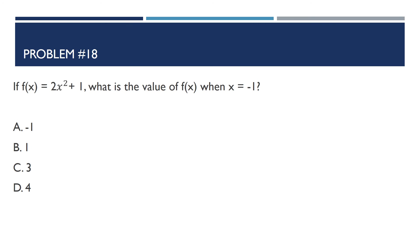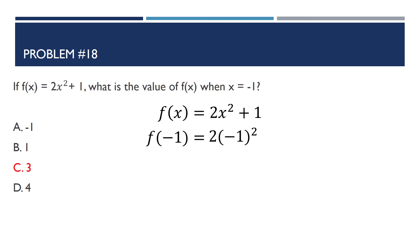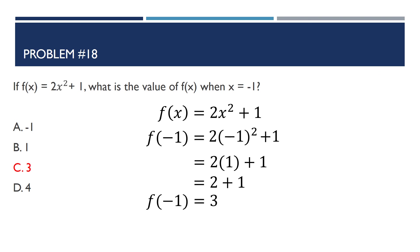Problem number 18: If f(x) = 2x² + 1, what is the value of f(x) when x = −1? The answer is 3. We replace x with −1: f(−1) = 2(−1)² + 1. Since (−1)² = 1, this becomes 2 × 1 + 1 = 2 + 1 = 3.